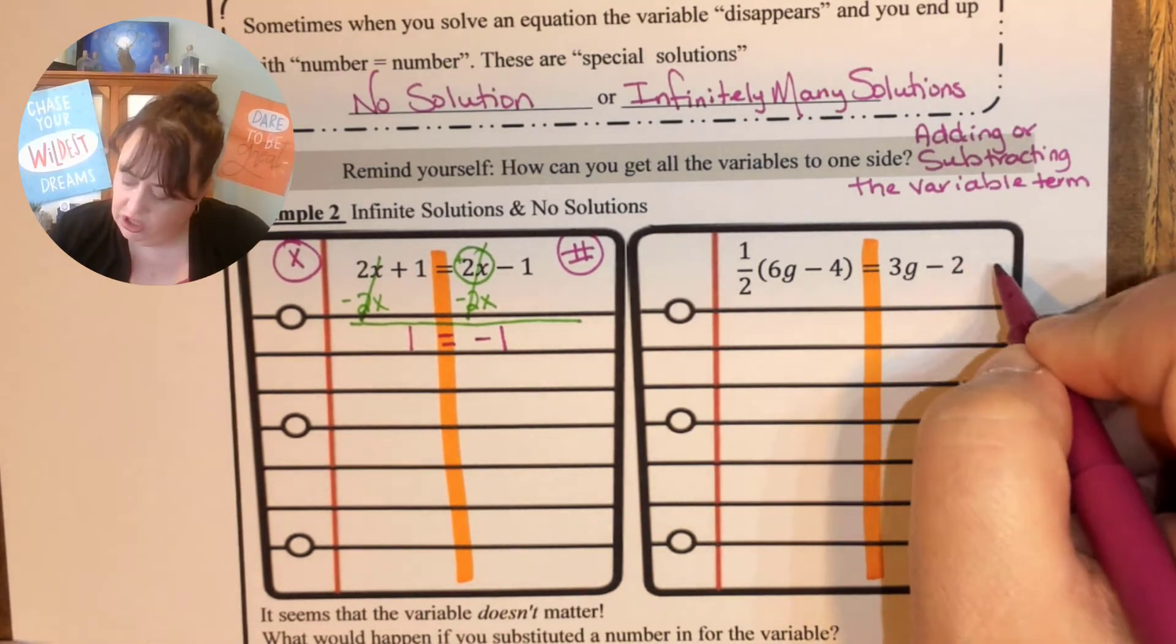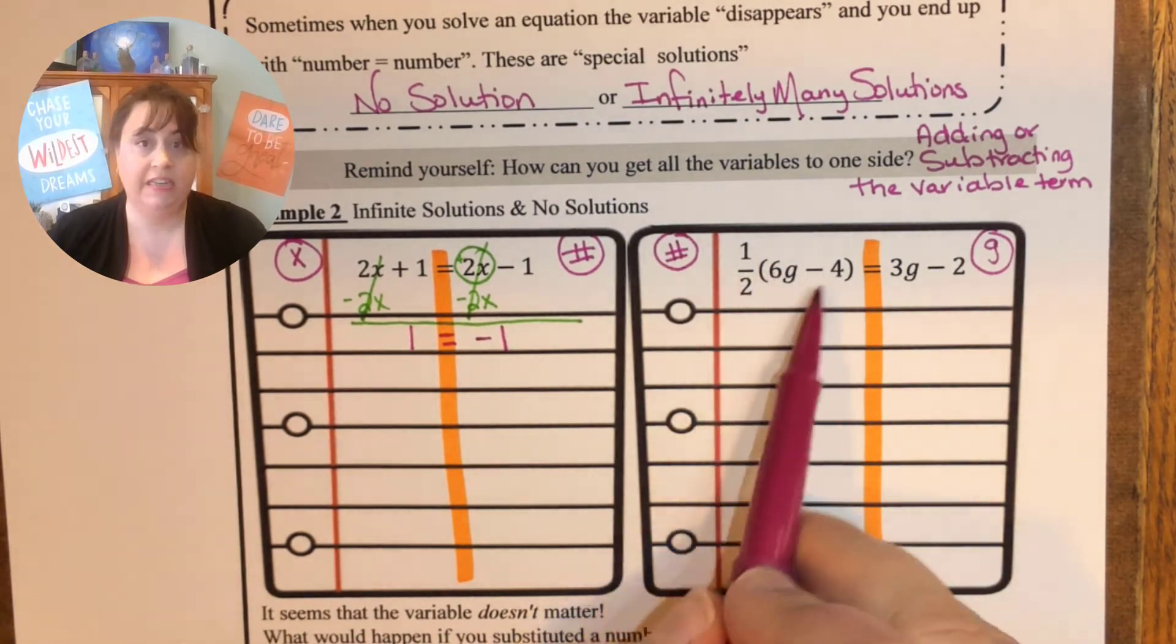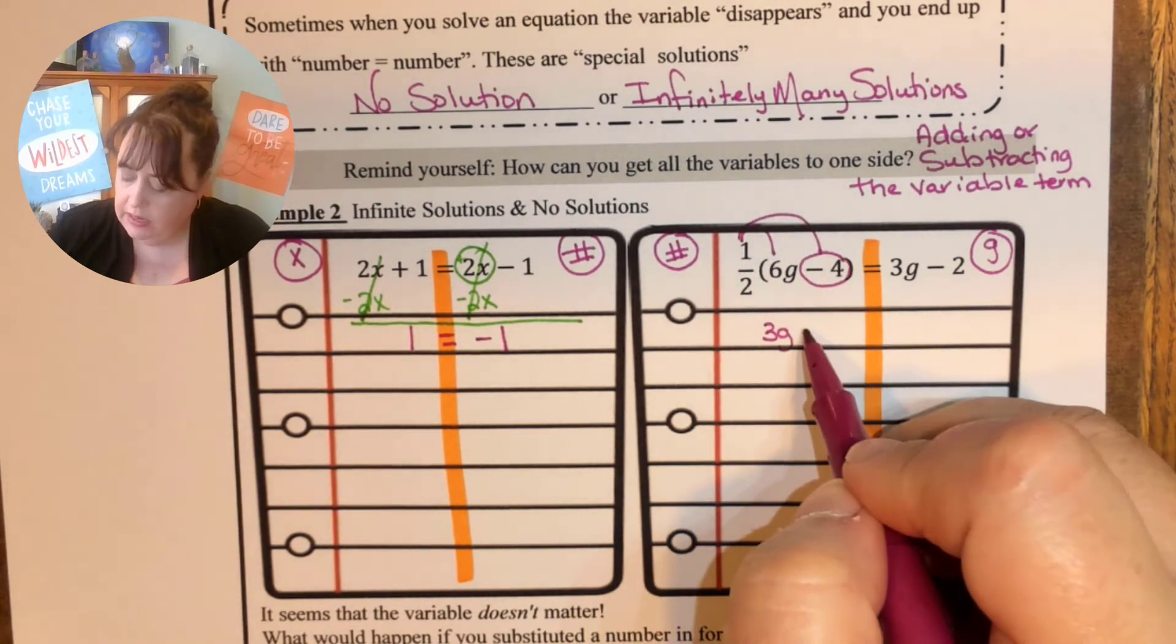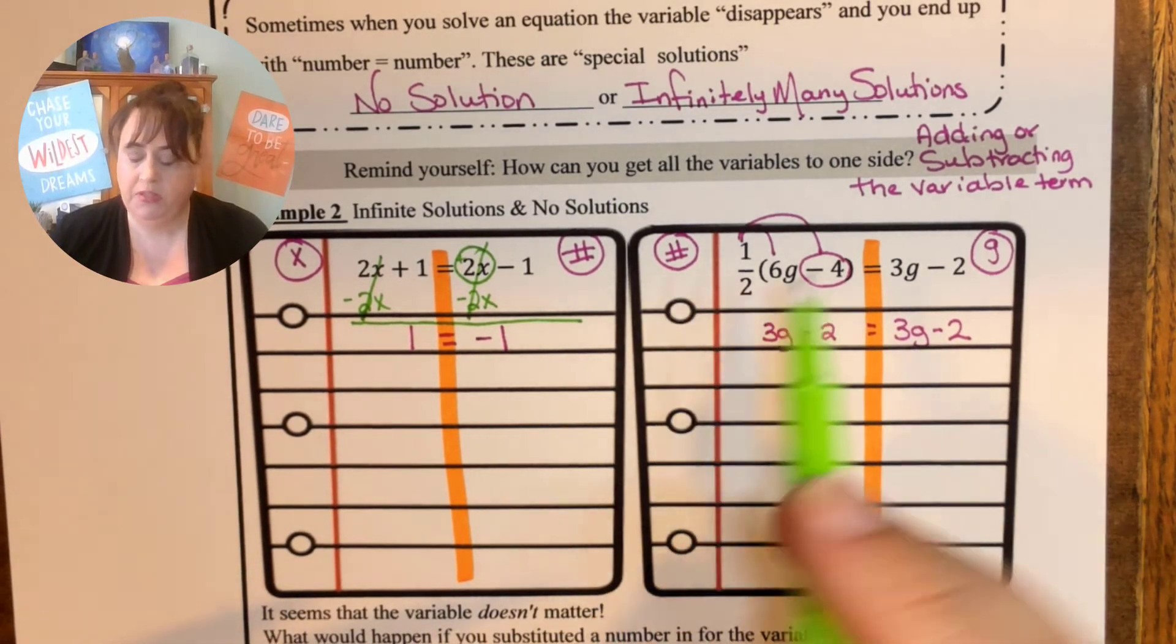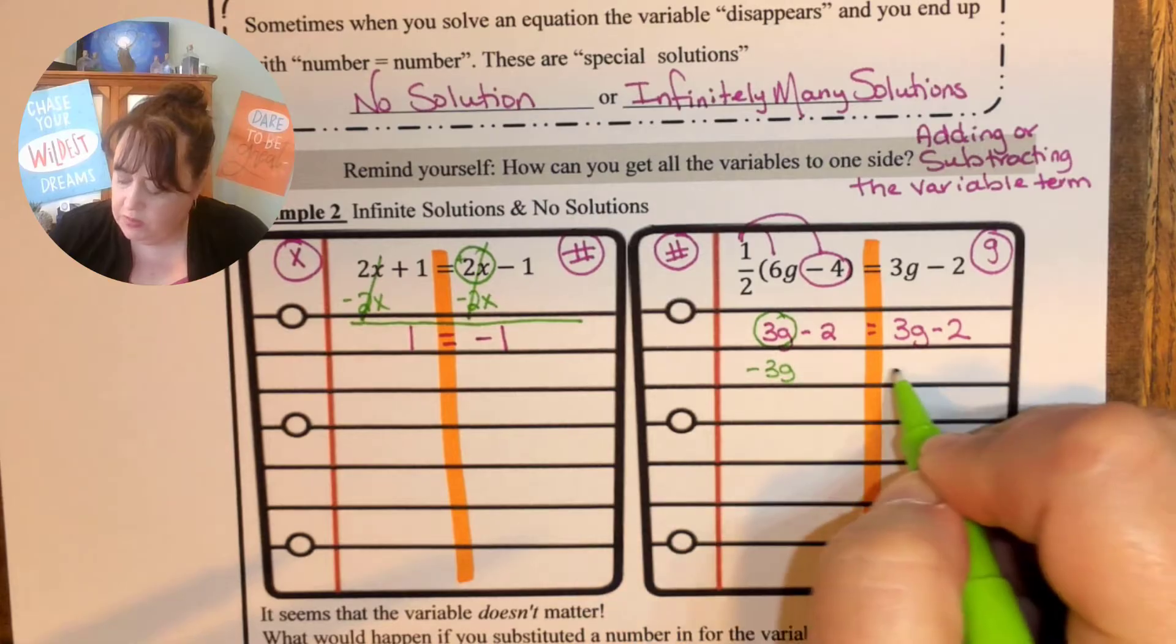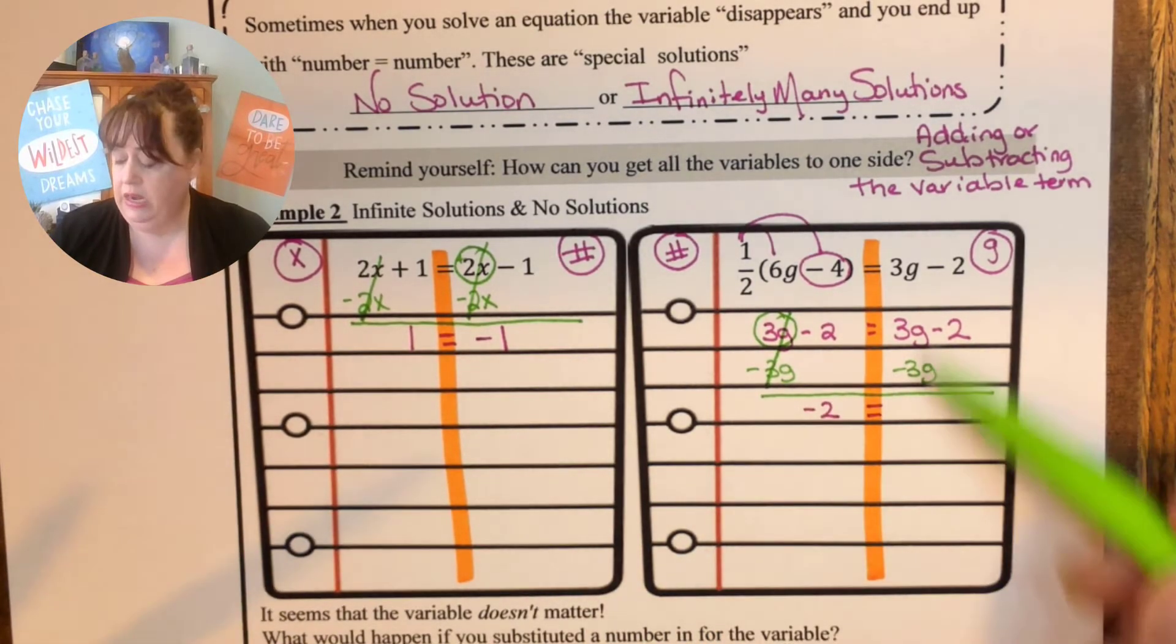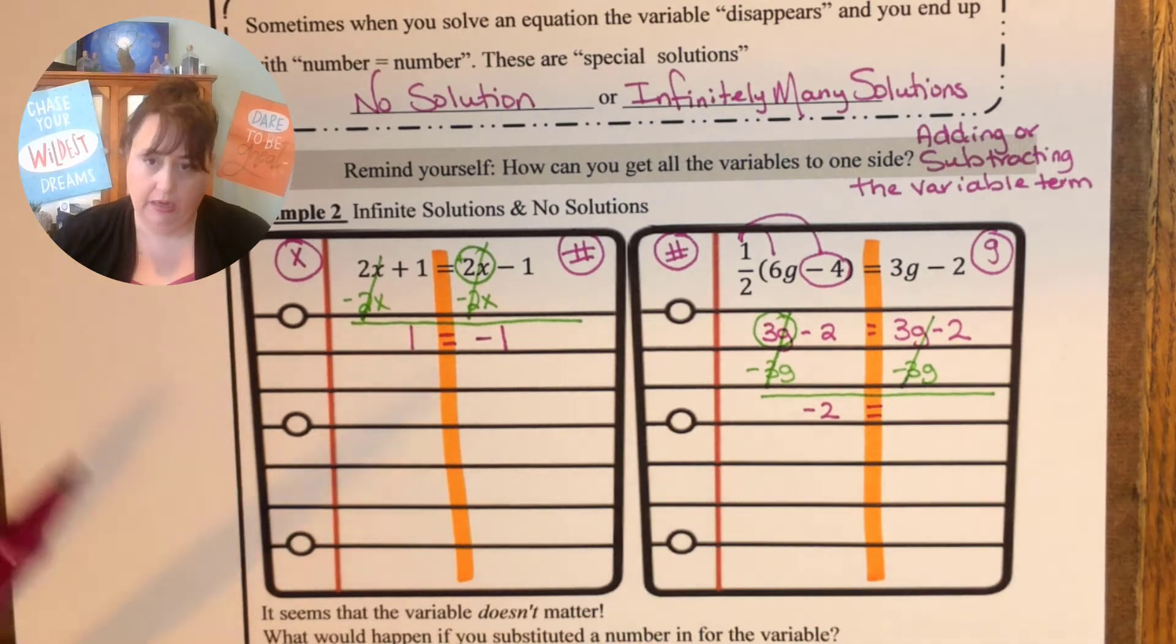Since this looks nicer I'm going to put my g's on this side and my numbers on this side. Before I can do this problem I actually need to deal with the distributive property. So one half of 6g is 3g and one half of negative 4 is a negative 2. I've decided I'm keeping my g's on this side and my numbers on this side. So this one has to move. That's a positive 3g so I'm going to subtract 3g from both sides. So I'm left with a negative 2 on the side and now I need to combine like terms but when I combine this 3g and this negative 3g it too went away. That's 0.